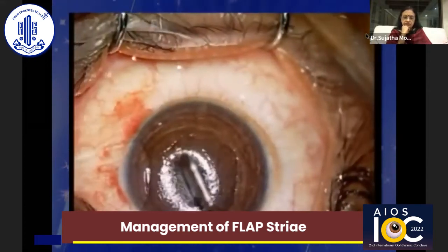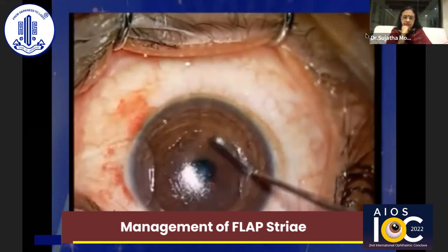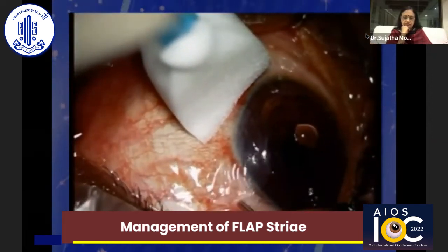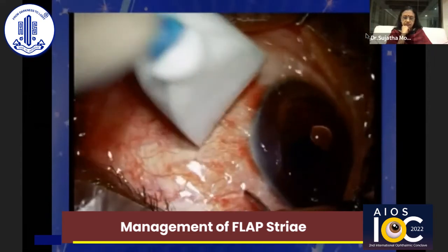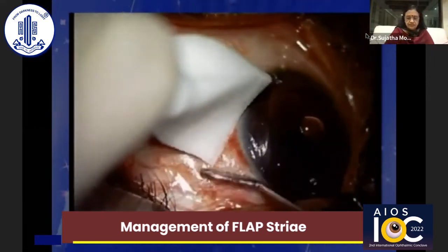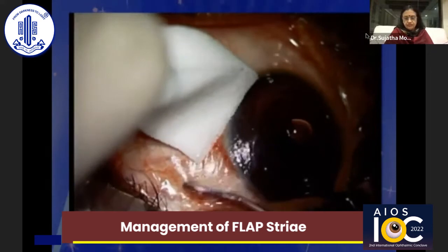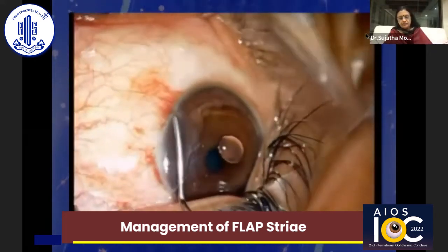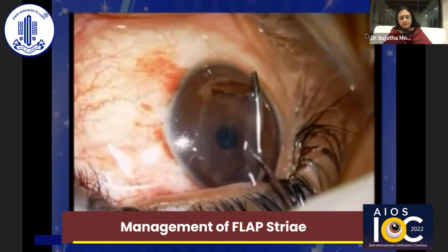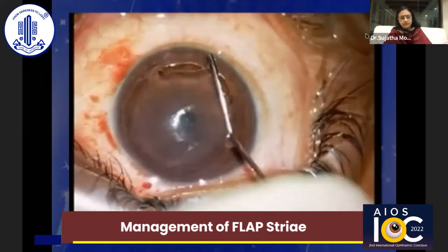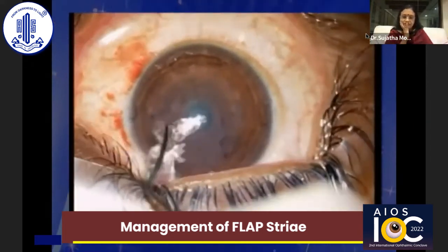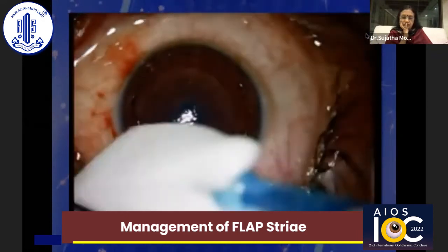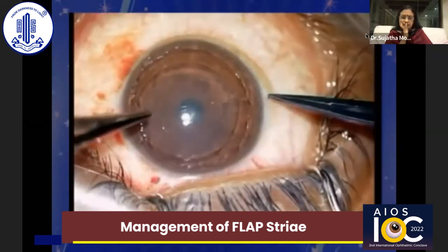The fourth case shows a completely displaced flap with rolled edges. This video highlights the importance of removing epithelium under the surface of the flap in addition to the stromal bed. The rolled-up flap edges are gently scraped of the epithelial ingrowth and replaced. Suturing the flap is mandatory in this situation to prevent repeat flap slippage and epithelial ingrowth.